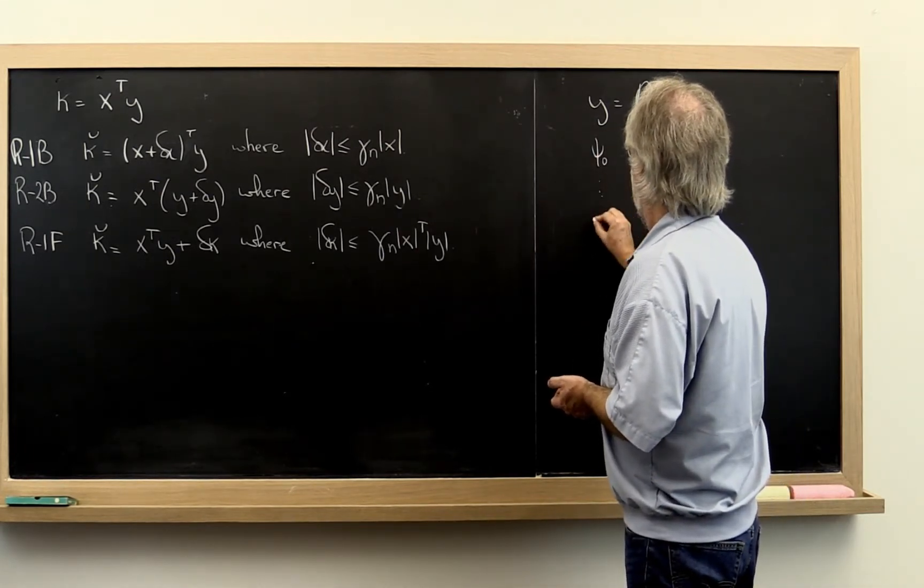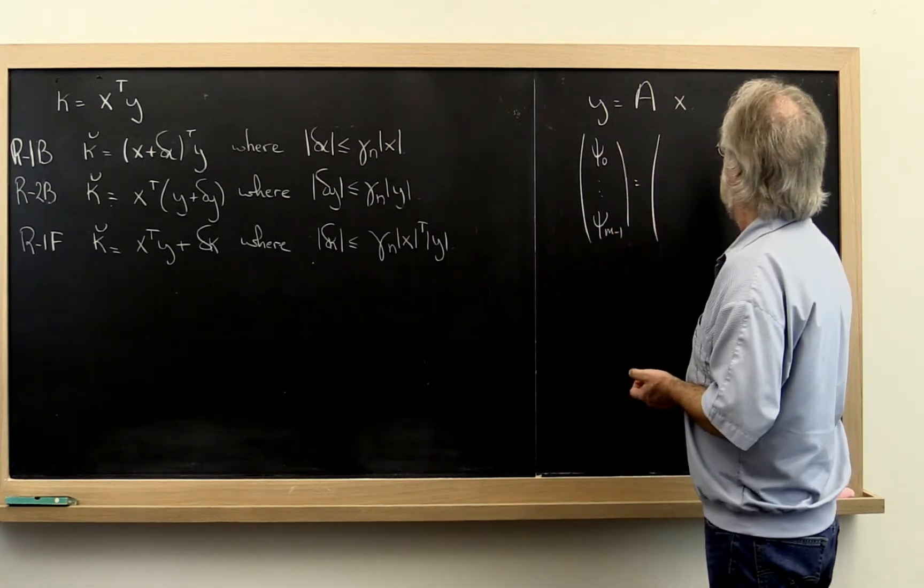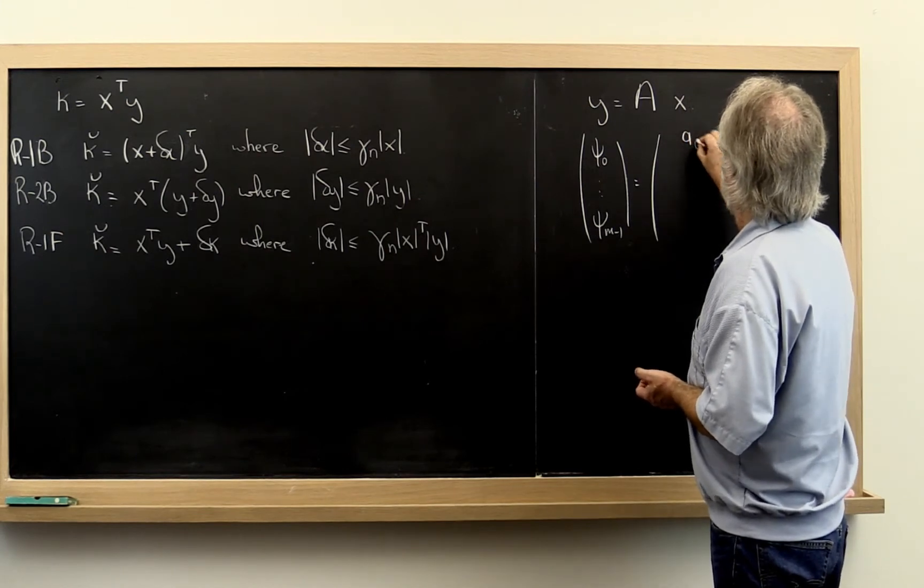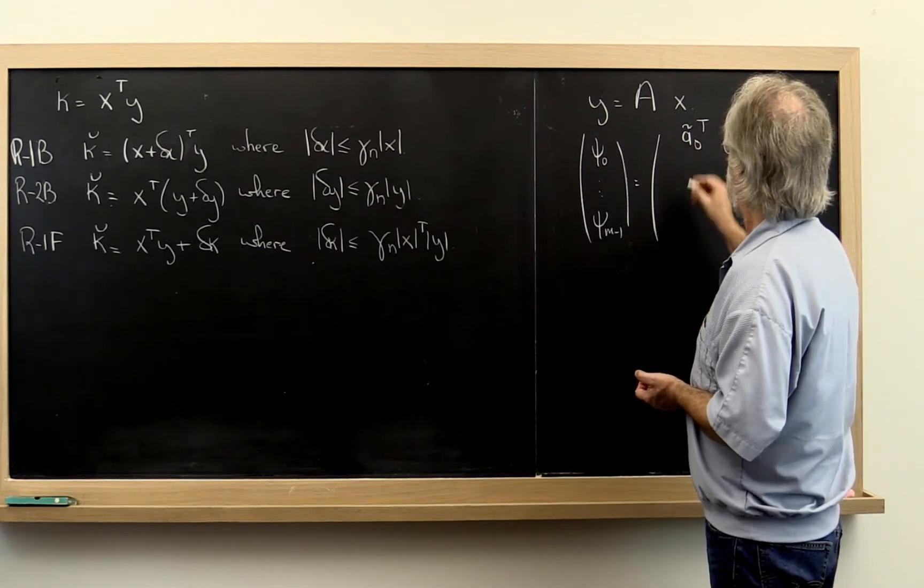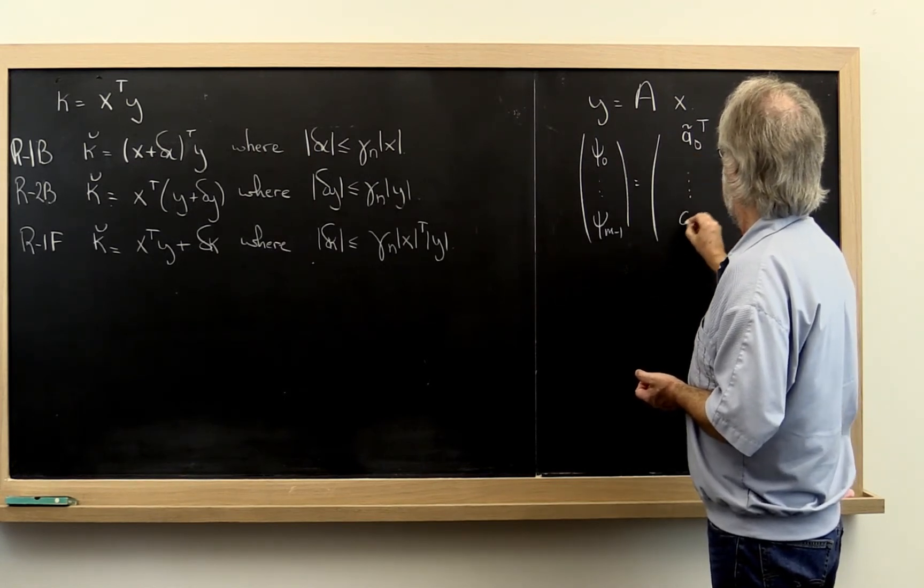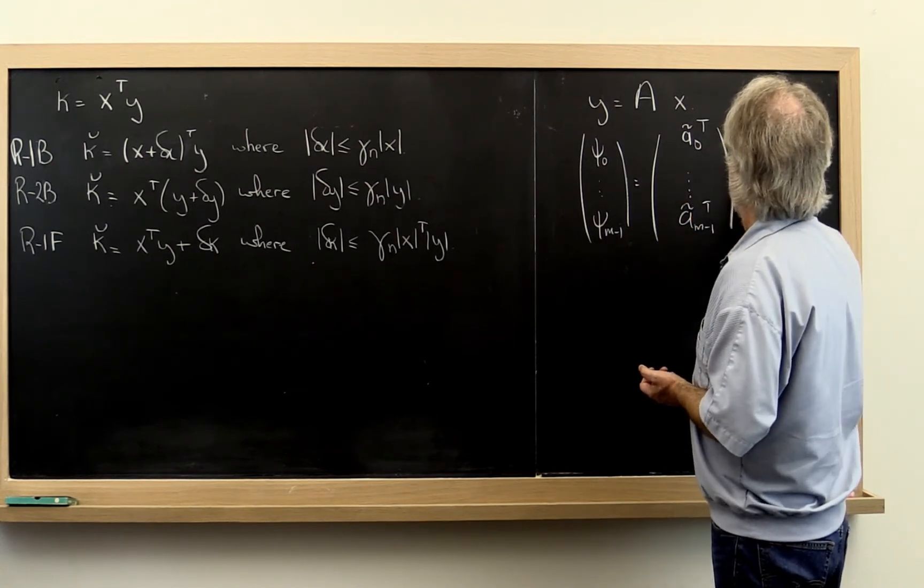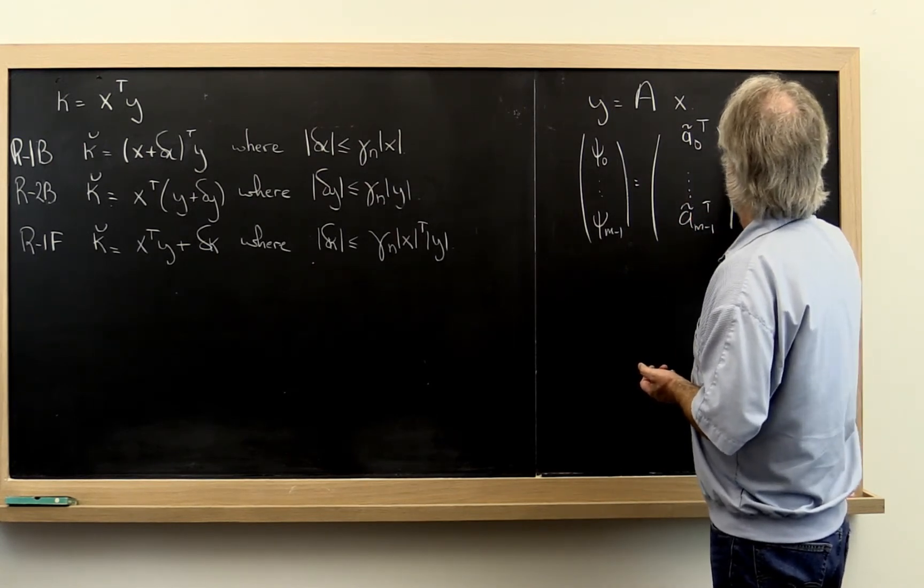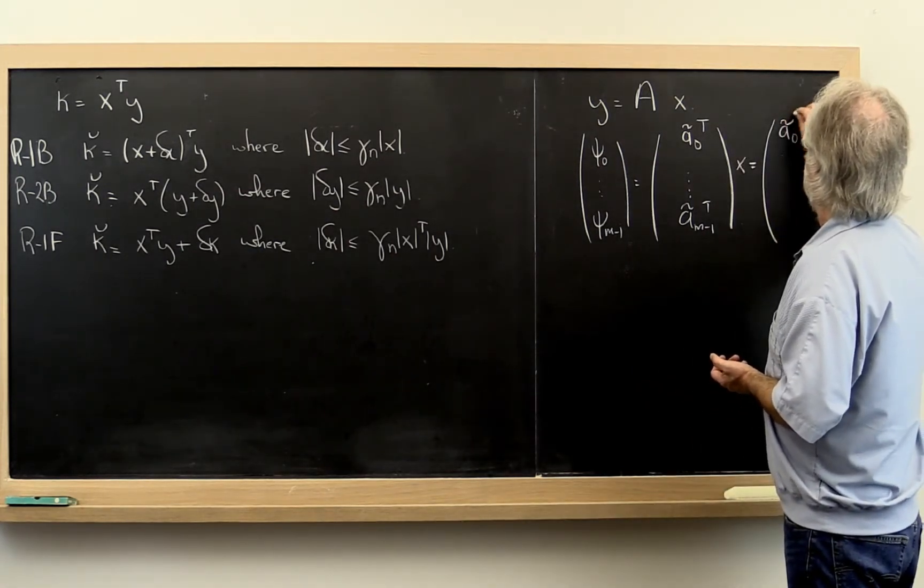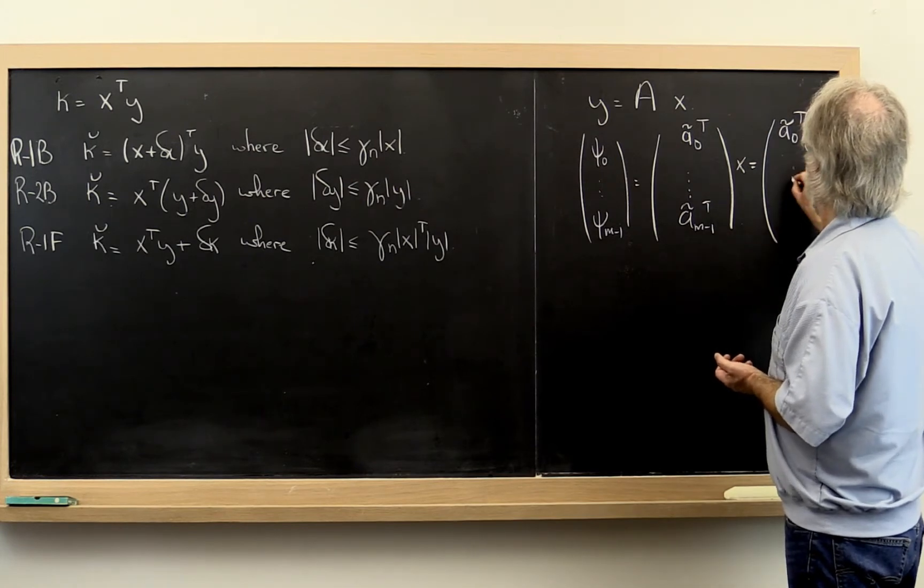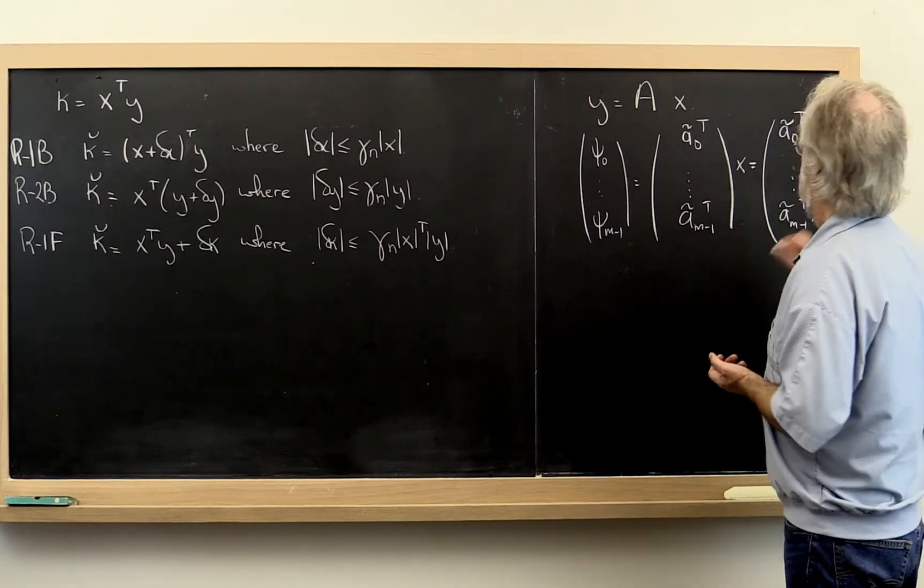Psi zero through psi M minus 1 is equal to A zero tilde transpose, that's the first row of matrix A, through A M minus 1 tilde transpose. And that multiplies vector x. And then what we get are the dot products of the rows with the vector x.